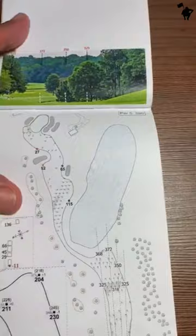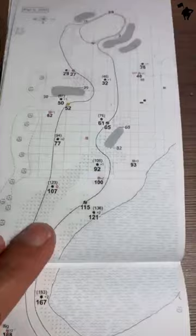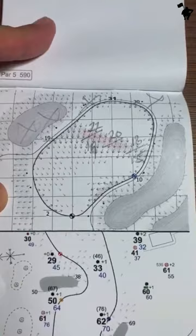Flip it over, and then you've got all the numbers to the front of the green, and then for some reason, you have to lay up, you've got all the numbers from here on in. And then you also have another page that has the short numbers, and a better diagram of the green.